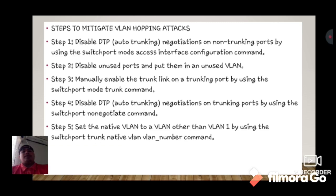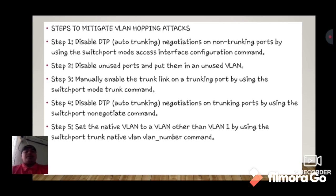Steps to mitigate VLAN hopping attacks: Step 1 — disable DTP auto trunking negotiations on non-trunking ports using the switchport mode access command. Step 2 — disable unused ports and put them in an unused VLAN. Step 3 — manually enable the trunk link on a trunking port using the switchport mode trunk command. Step 4 — disable DTP auto trunking negotiations on trunking ports using the switchport nonegotiate command. Step 5 — set the native VLAN to a VLAN other than VLAN 1 using the switchport trunk native vlan command.